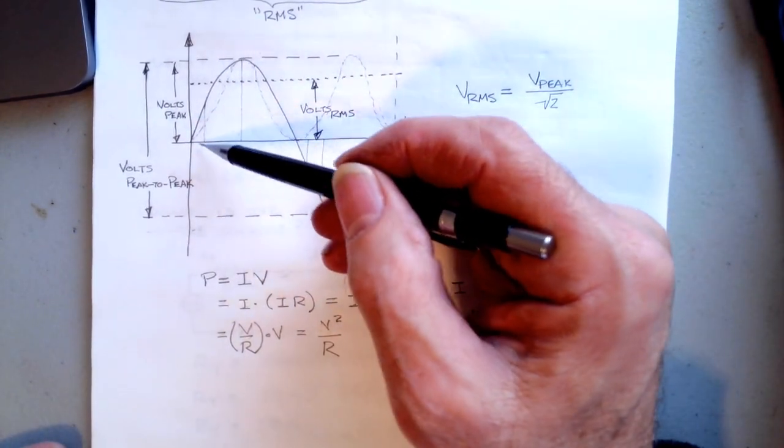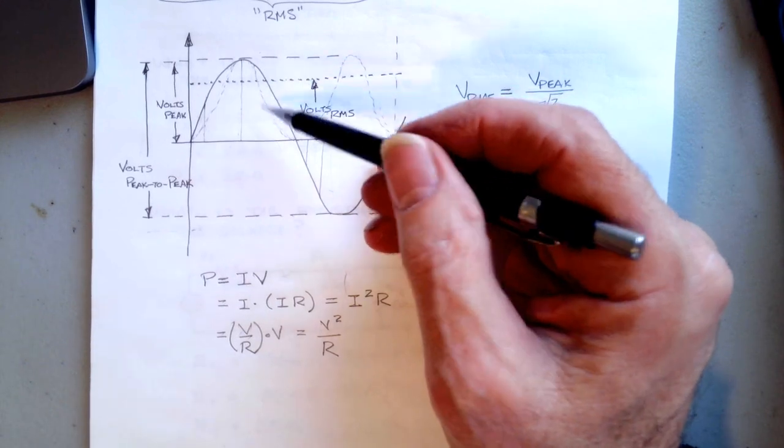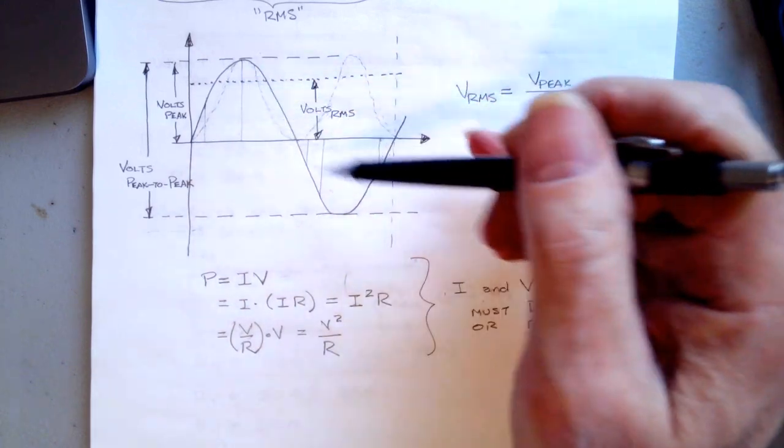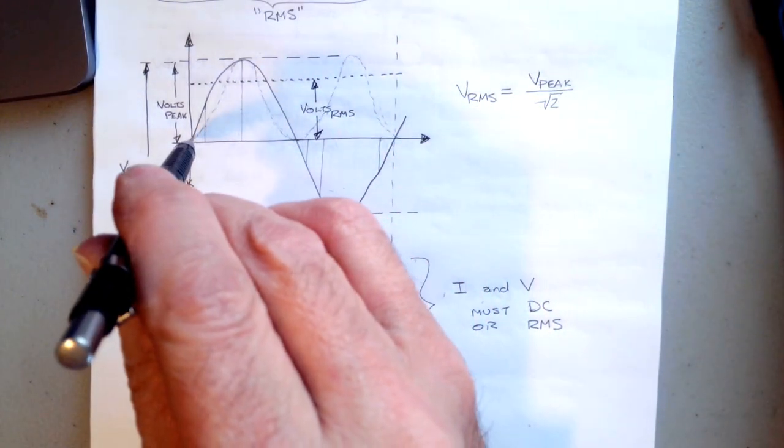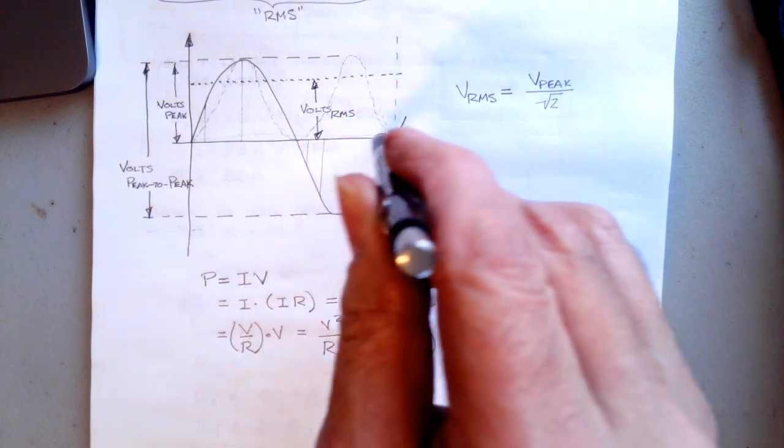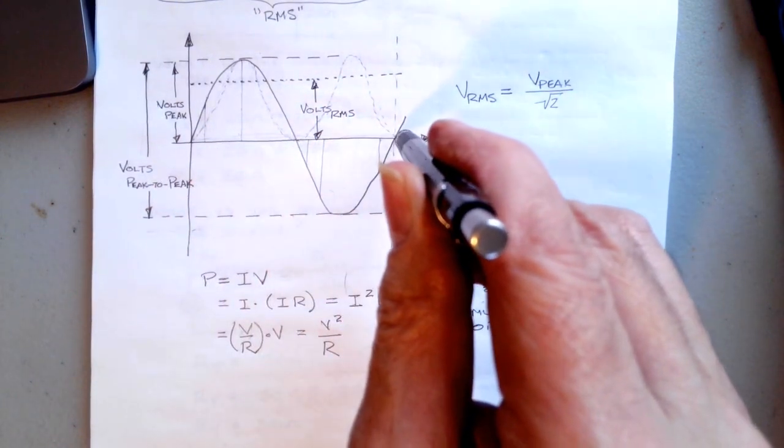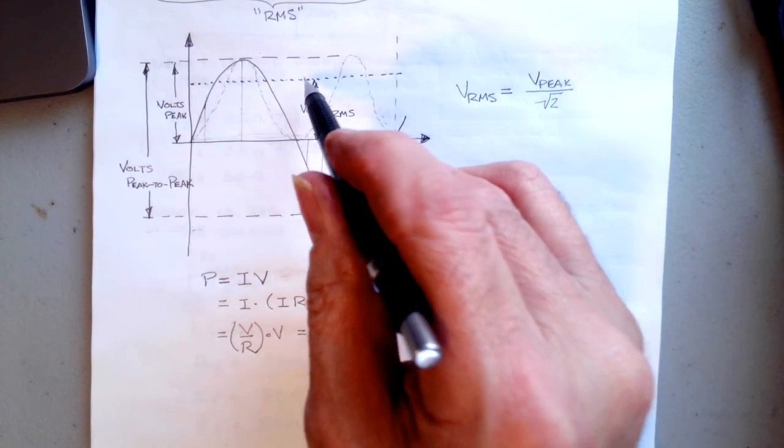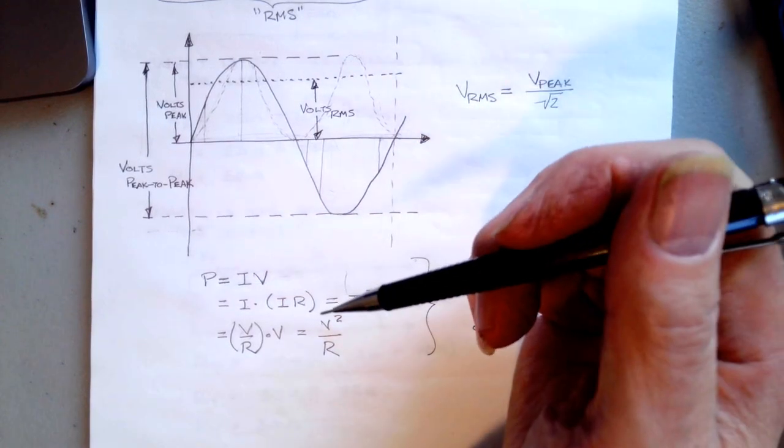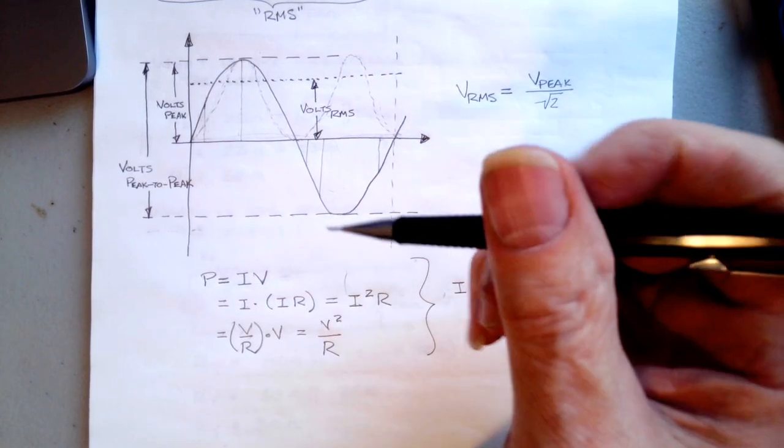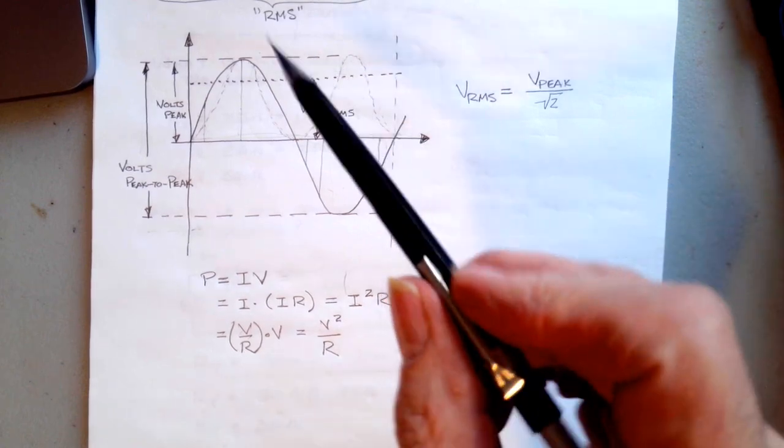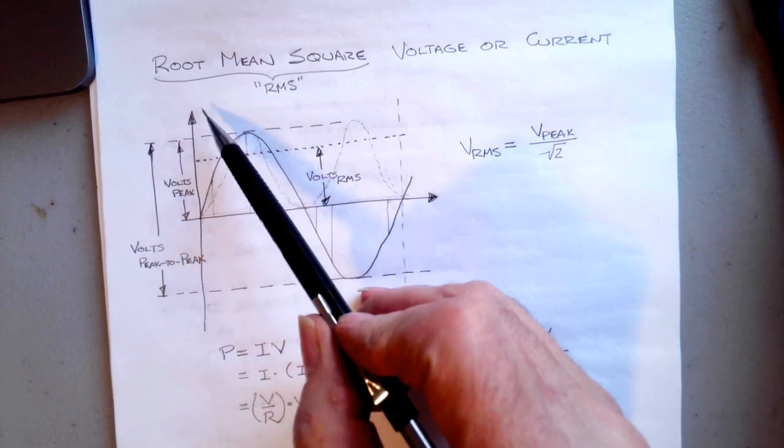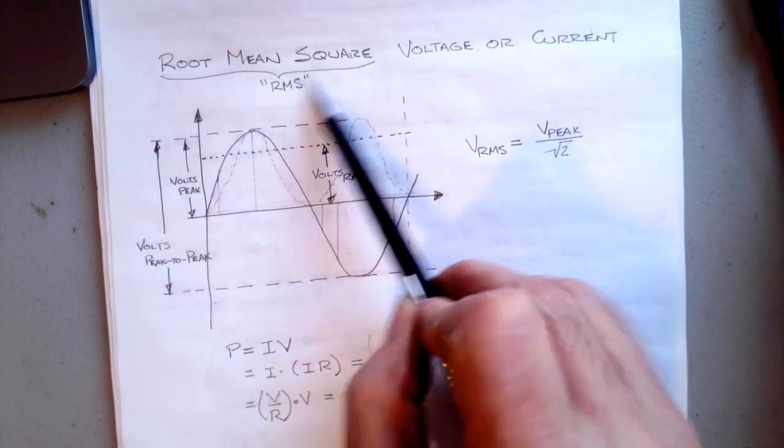So square all these powers, add them up, and then divide by the time in this one cycle here—divide by the period of this thing—and you will get an average power. You take the square root of that and you'll get an average voltage. So the RMS voltage is the square root of the average square.